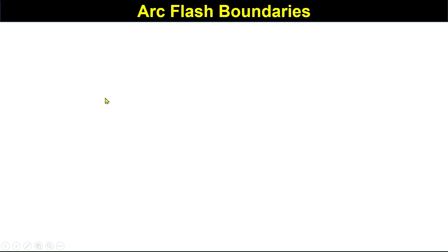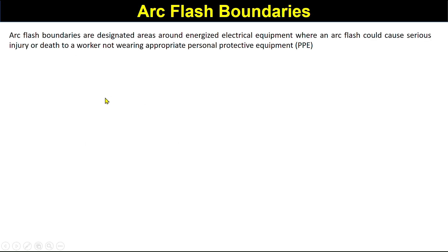Arc flash boundaries are designated areas around energized electrical equipment where an arc flash could cause serious injuries or death to a worker not wearing appropriate personal protective equipment.